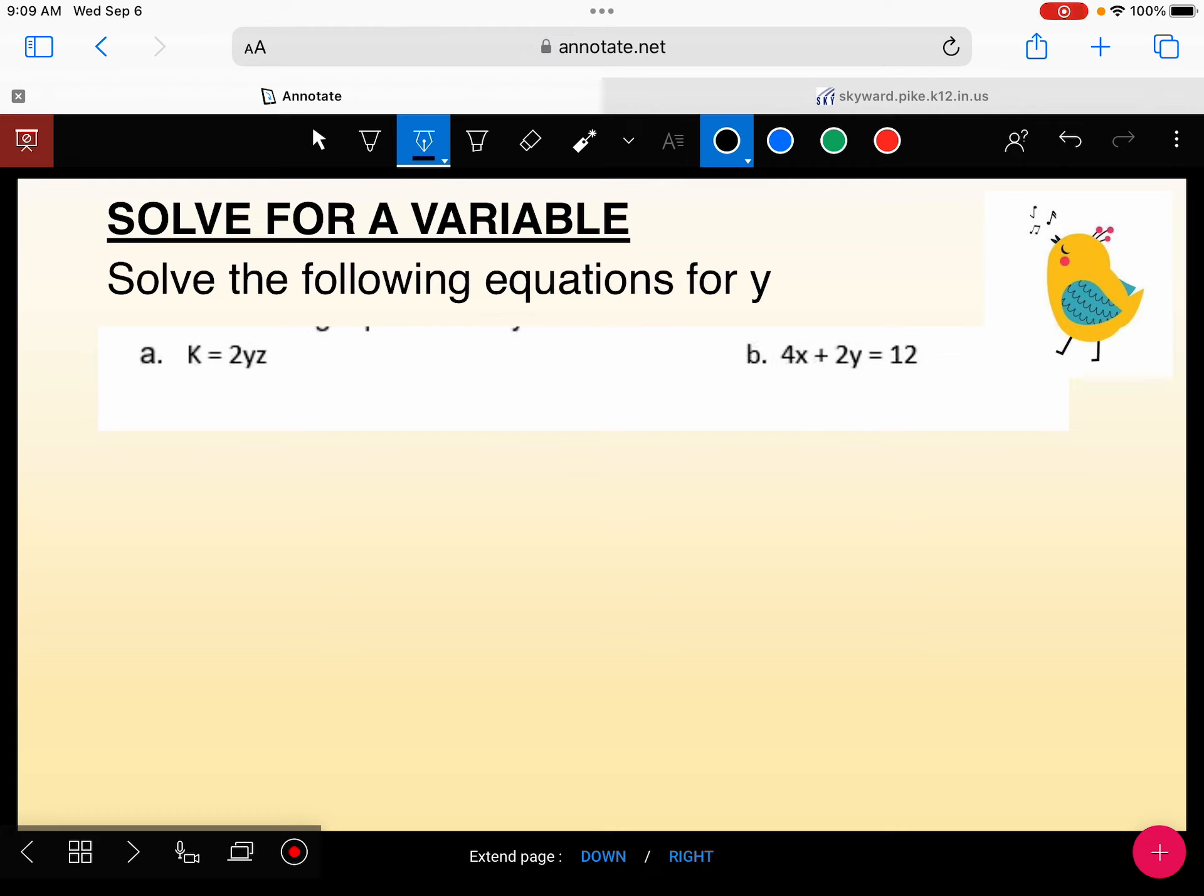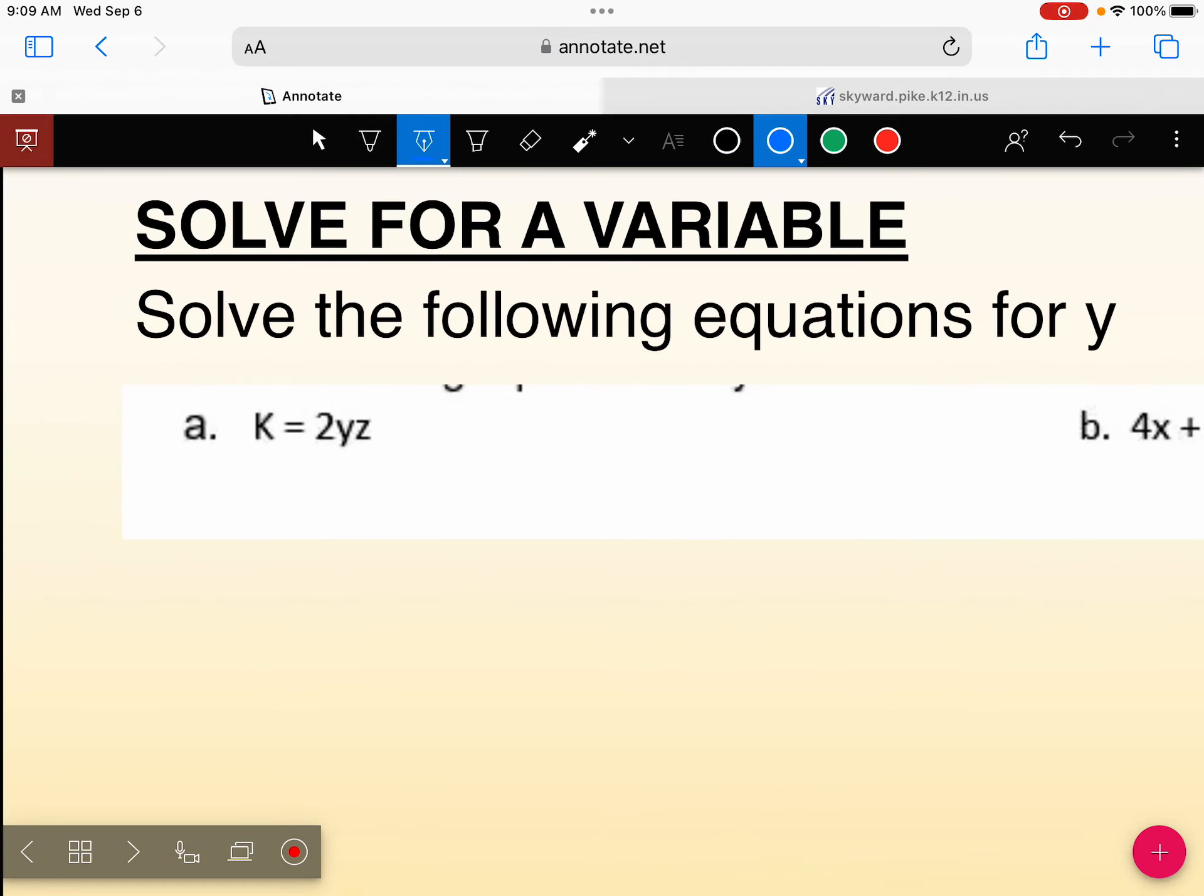So solving for a variable means that we have to figure out what is happening to y and then do the opposite of whatever operation is happening to y. So here, notice I have a 2, a y, and a z. What's the invisible symbol? Like, what operation is happening between these terms? Between the 2 and the y and between the y and the z? What's happening? Are they being added? Multiply. And what's the opposite of multiplication? Division. So we're dividing both sides by the 2 and by the z. So when we do that, we're left with k divided by 2z equals y. And that is your answer.